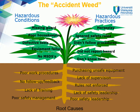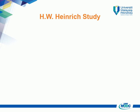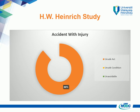An unsafe act is usually the last of a series of events before the accident occurs. So by stopping or eliminating the unsafe act, we can stop the accident from occurring. According to a study by H. W. Heinrich in 1928, an unsafe act occurs in approximately 85–95% of all analyzed accidents with injuries.